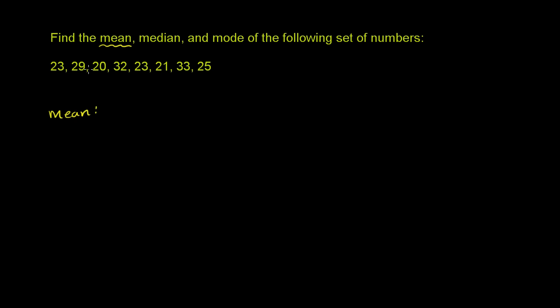So this is our mean. We want to sum 23 plus 29 plus 20 plus 32 plus 23 plus 21 plus 33 plus 25, and then divide that by the number of numbers.